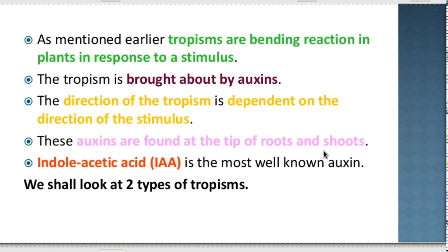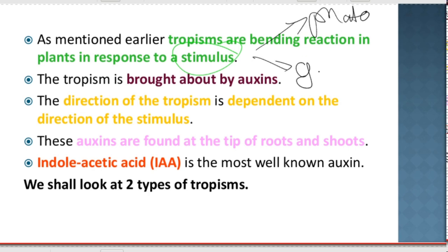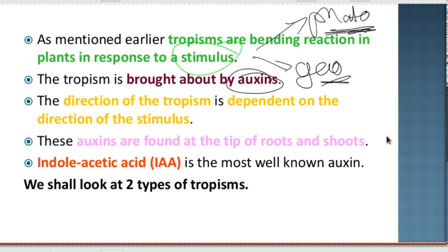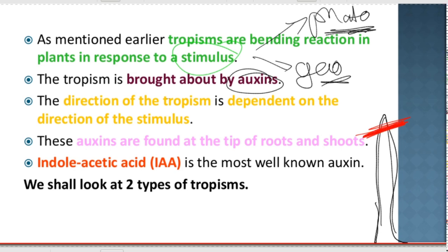Tropism refers to a bending reaction of plants in response to a stimulus. We discussed two types: phototropism — bending towards the light — and geotropism — bending towards gravity. The tropism is brought on by auxins, and the direction of the tropism is dependent on the direction of the stimulus. Auxins are found in the tip of the roots and the shoots. In experiments using a coleoptile — which is the first stem of a plant — if we cut off the tip of that stem, we find that there is no tropism happening.